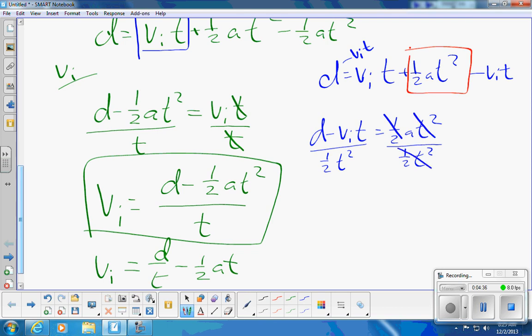My one half t squared goes bye bye, and I get a is equal to d minus vi t over one half t squared. And we're done.